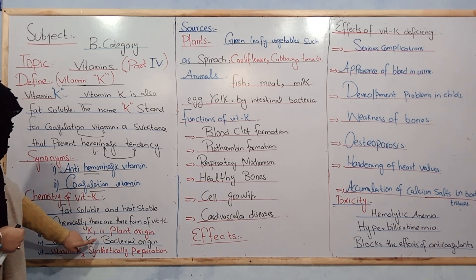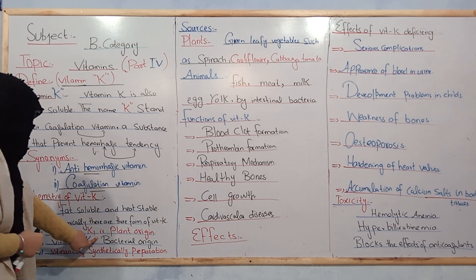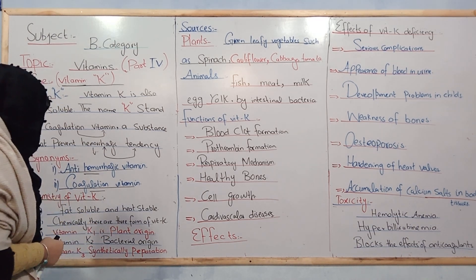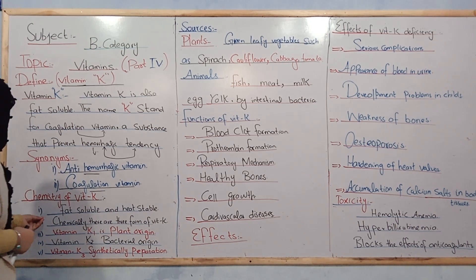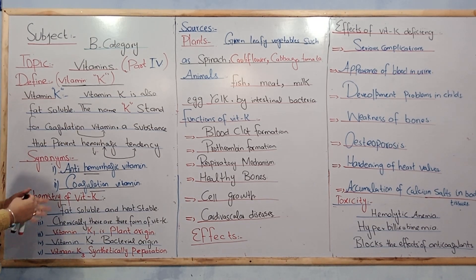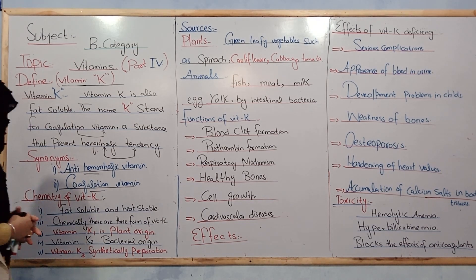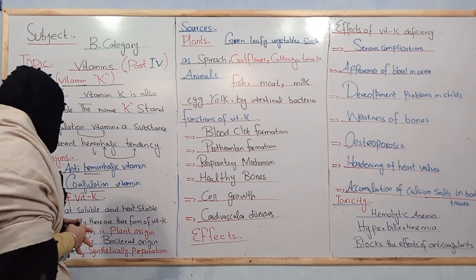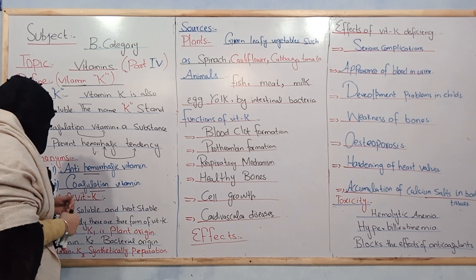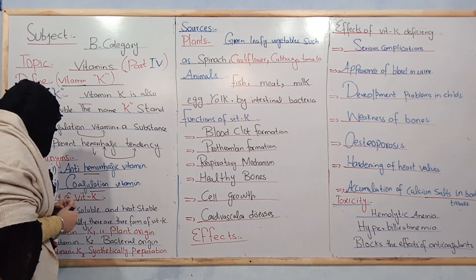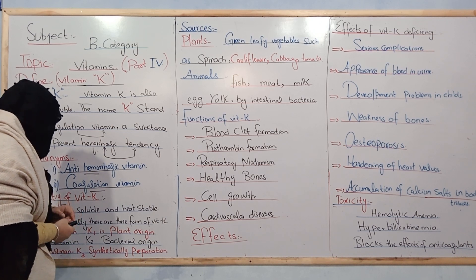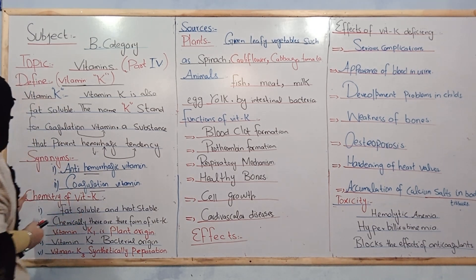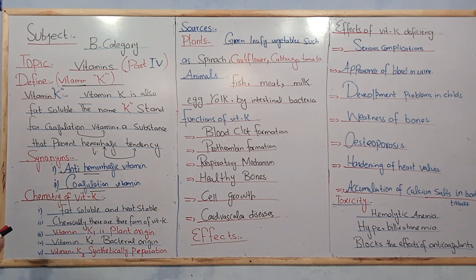Vitamin K1 is of plant origin. Vitamin K2 is of bacterial origin. Vitamin K3 is a synthetically prepared form. This covers the basic chemistry of vitamin K.